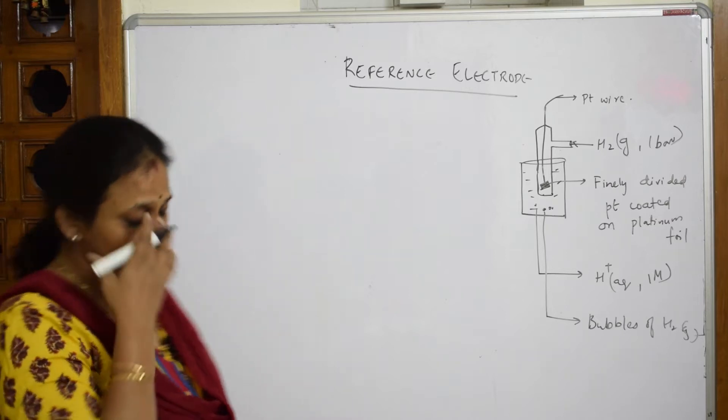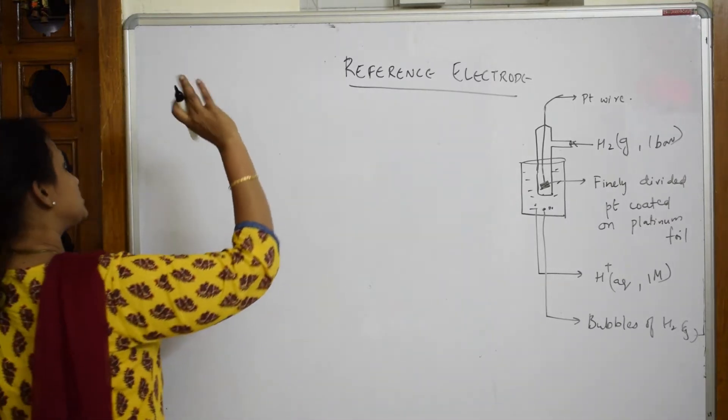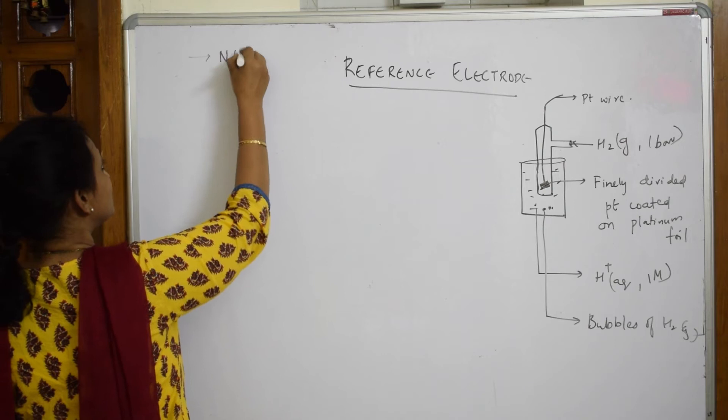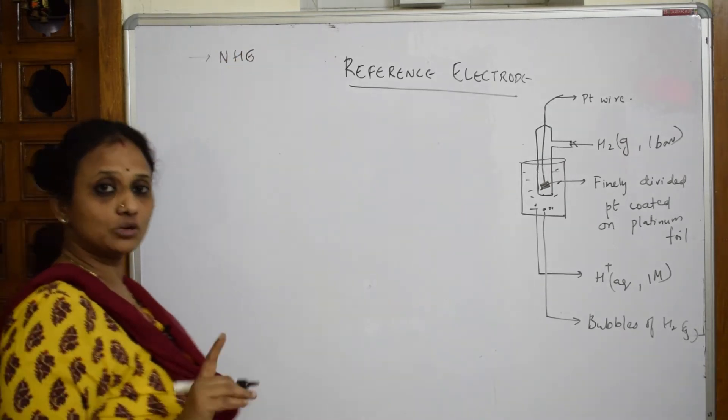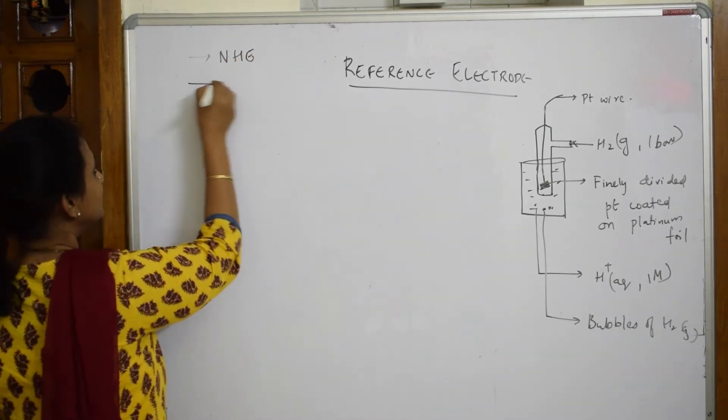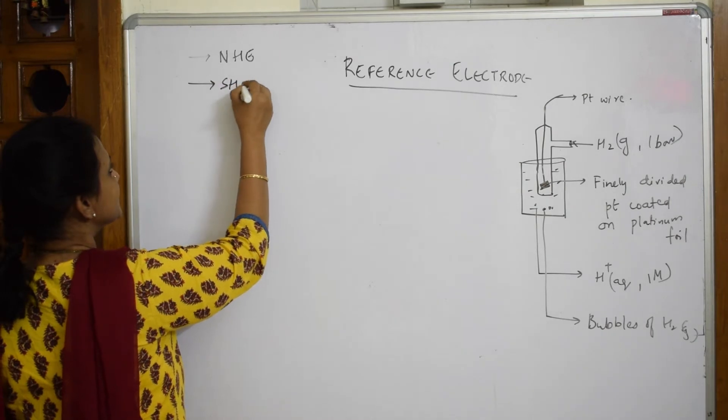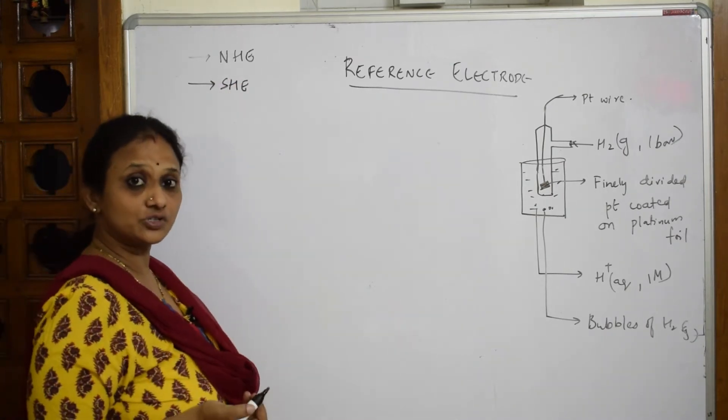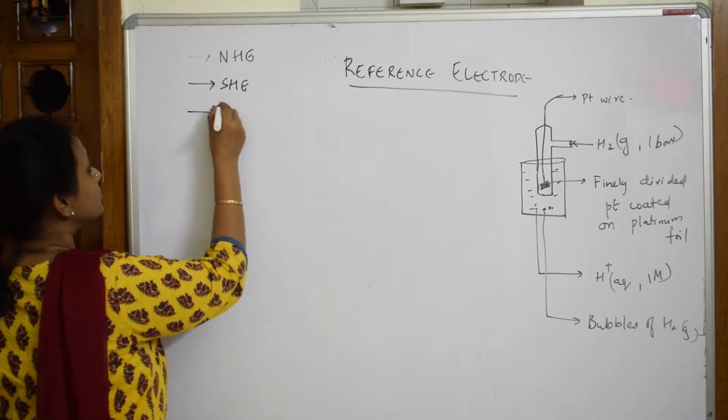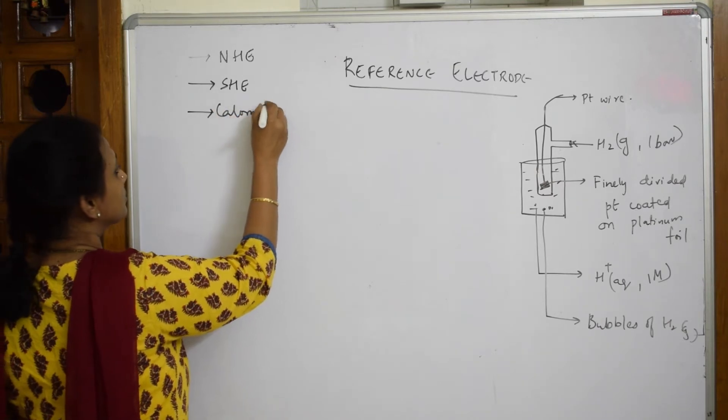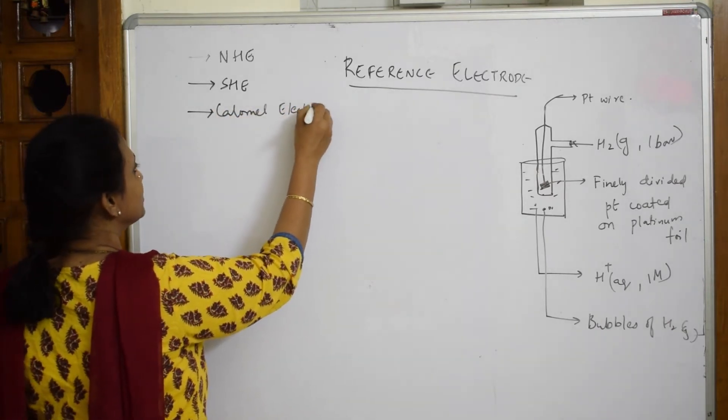What are reference electrodes? Basically, there are types of reference electrodes: NHE (normal hydrogen electrode), SHE (standard hydrogen electrode), and calomel electrode where you use mercury. For your syllabus, you have SHE.